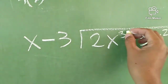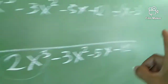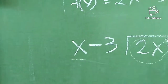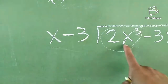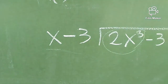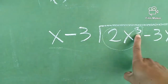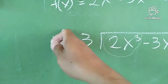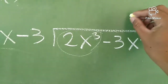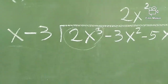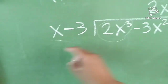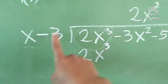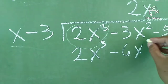Ang kailangan po nating bigyan ng pansin dito is yung first term. Tulad nung ginawa natin doon sa usual division natin. Yung first term, and then dito din yung first term din natin. So yun ang bibigyan natin ng pansin. 2x cubed divided by x — so exponent nito ay 1, bawasan mo lang po siya ng isa — so we have 2x squared. Then multiply na po natin: 2x squared times x, the answer is 2x cubed. 2x squared times negative 3, the answer is negative 6x squared.